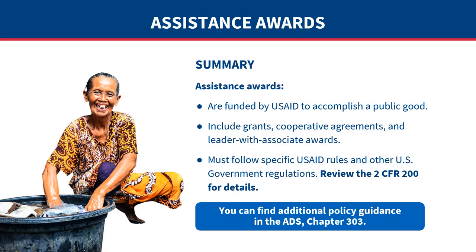This completes an overview of the different types of assistance awards. To summarize, assistance awards are funded by USAID to accomplish a public good. They include grants, cooperative agreements, and leader with associate awards, and they must follow USAID rules and other U.S. government regulations. We encourage new USAID partners to get familiar with 2 CFR 200, where you can find the actual rules for assistance. You can also find additional policy guidance in ADS Chapter 303.